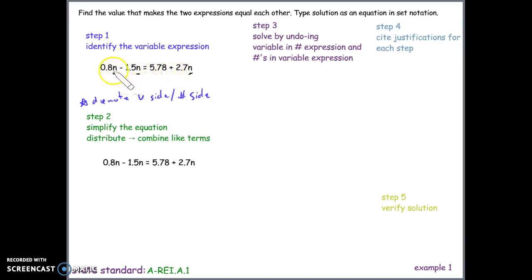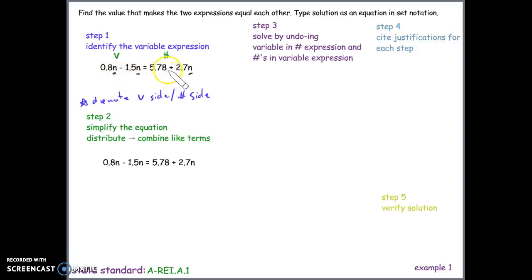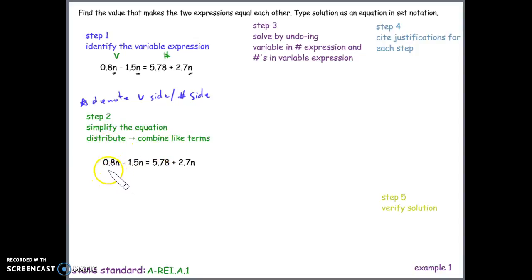I'm going to denote the left side as the variable side and the right side as the number side. Anything on the variable side that is a number must go, and all variables on the number side must go. Step two is to simplify the equation by distributing or combining like terms.